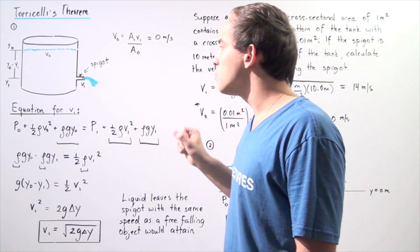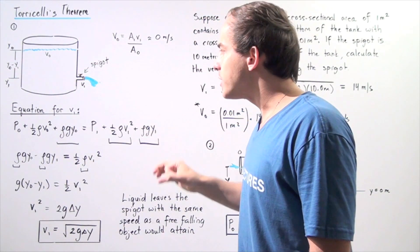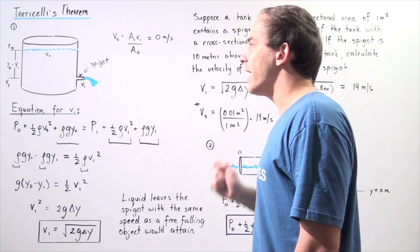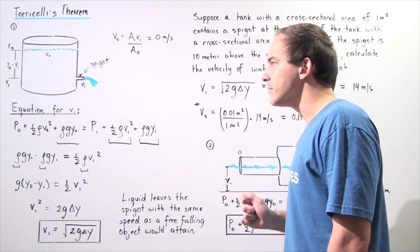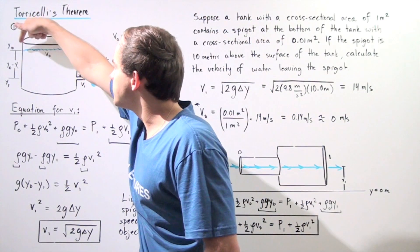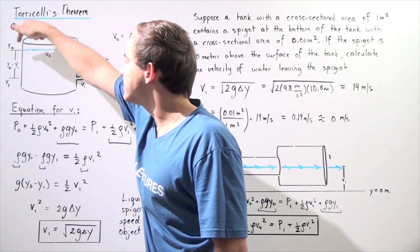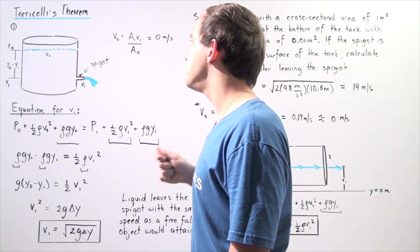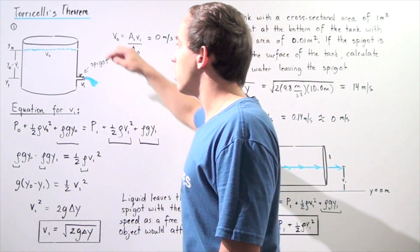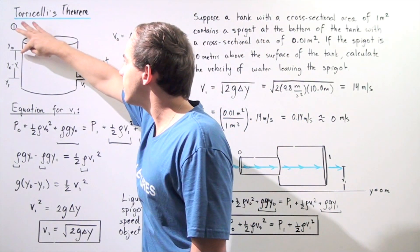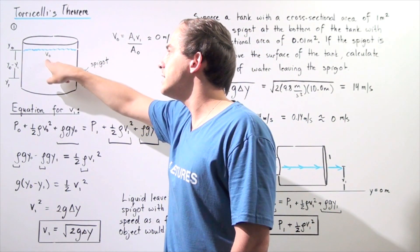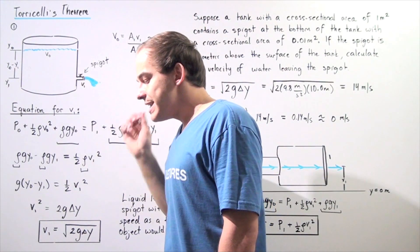The cross-sectional area of the spigot is given by A1, and the cross-sectional area of the tank at the top is given by A0. The velocity of the fluid at the surface of the tank is given by V0.